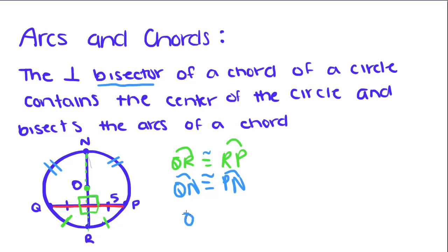That means that QR is congruent to RP. Which makes sense, because if these two chords are congruent, then these two segments must be congruent.